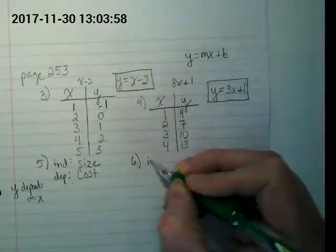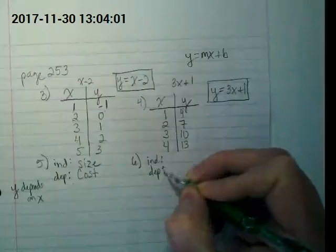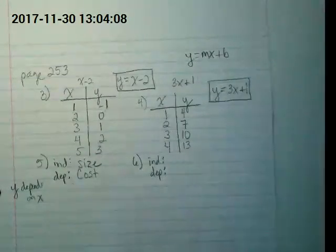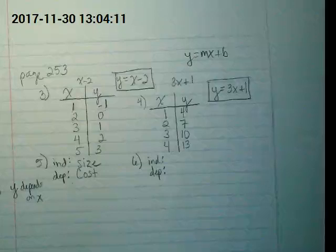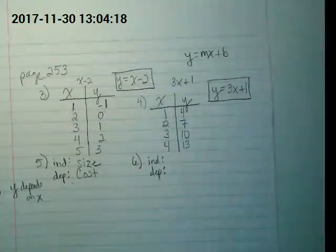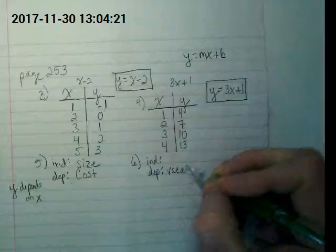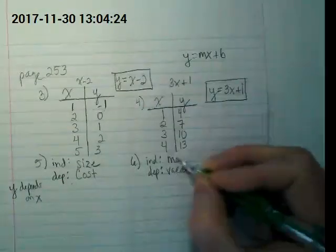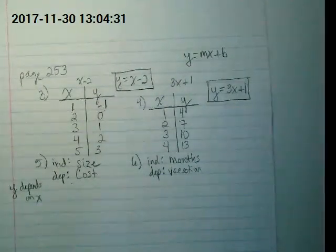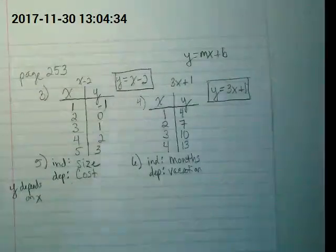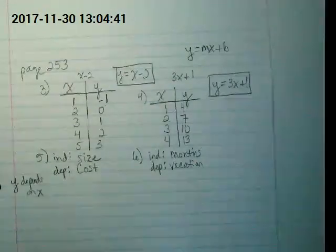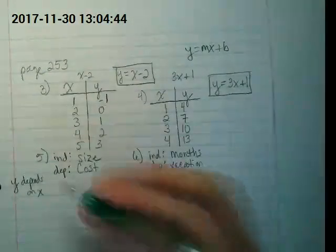Number 6. We're looking again for independent and dependent. I often fill in dependent first. It's easy to think about what here depends on the other part. What depends on what in an employee receives two vacation days for every month worked? Vacation depends on months worked. Can you guys picture the graph? Going across the bottom would be the months and going up the Y would be how many vacation days they've earned. Thumbs up on 5 and 6.